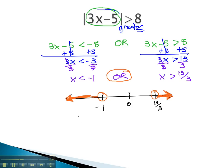In interval notation, the left side goes down to negative infinity and up to negative 1 with a curve bracket. We use union to show there's a second part of the graph. And then we go from 13 thirds all the way up to infinity.